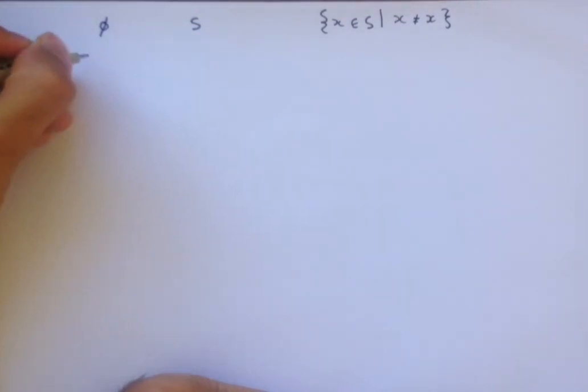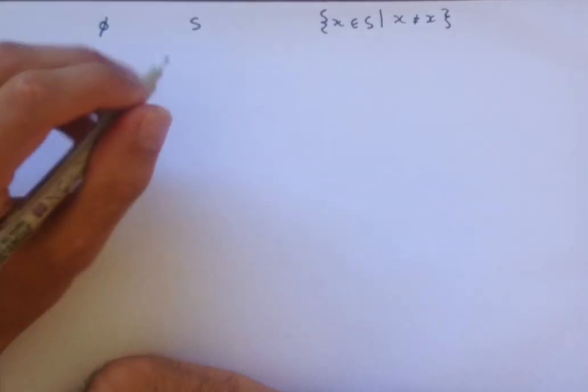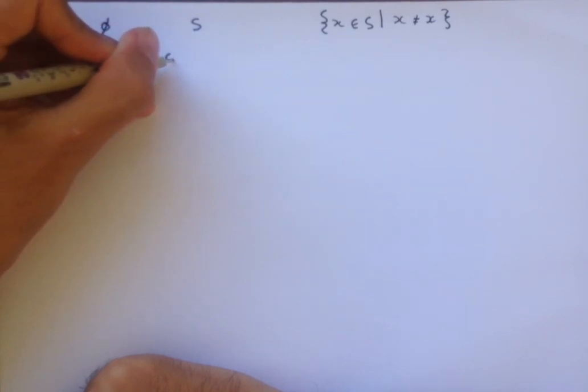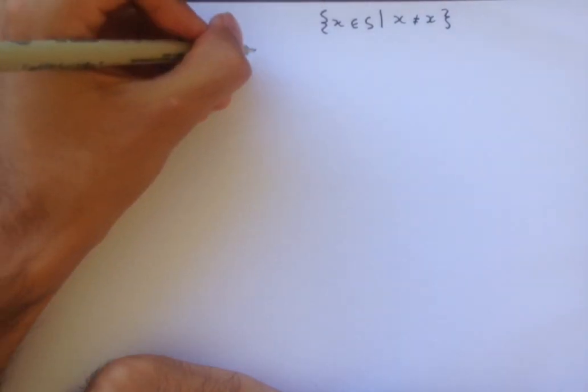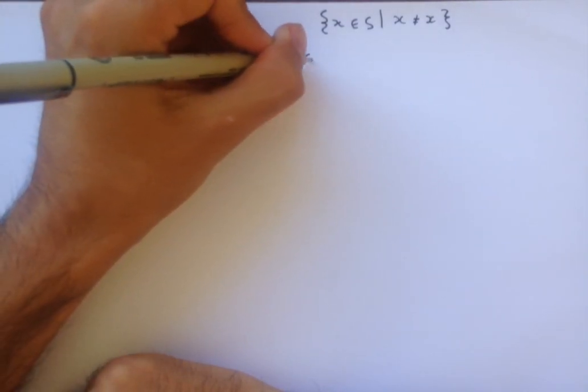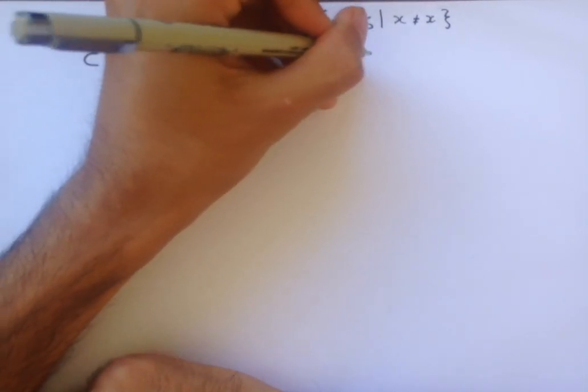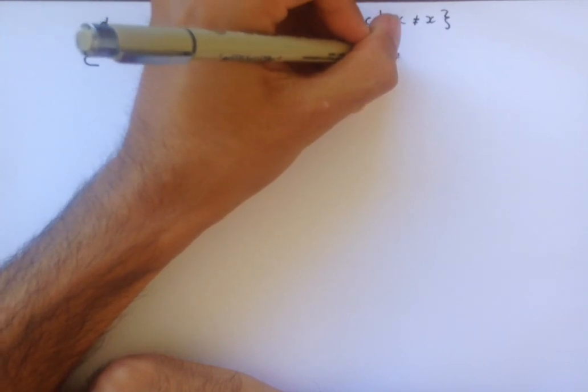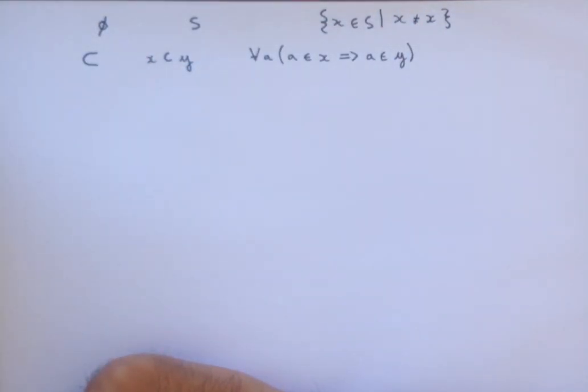The next thing that we're going to define is what a subset is. It's represented by this symbol, kind of a sideways U. And we say that X is a subset of Y if, for all A, A is in X implies A is in Y. This just means that X is a set that only contains elements that are in Y. If you were to take elements from Y and make a new set from it, you would always end up with a subset.